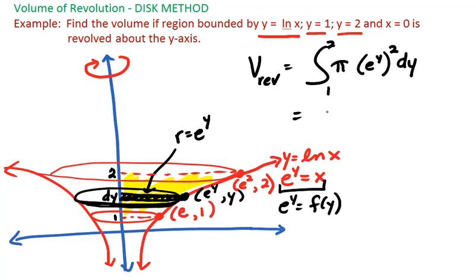We can simplify here. We can bring the constant pi to the outside, and we can rewrite this as e to the 2y.